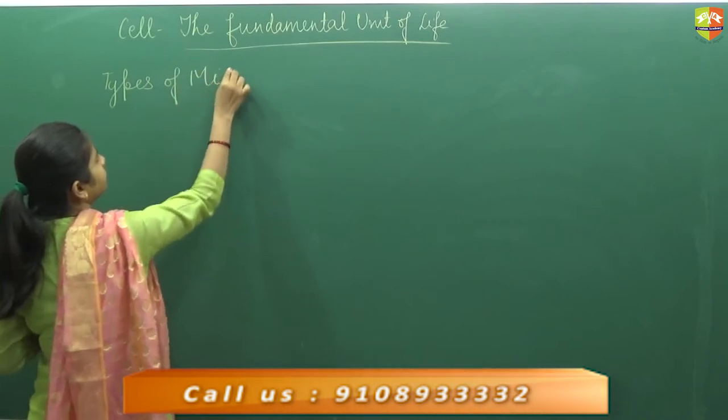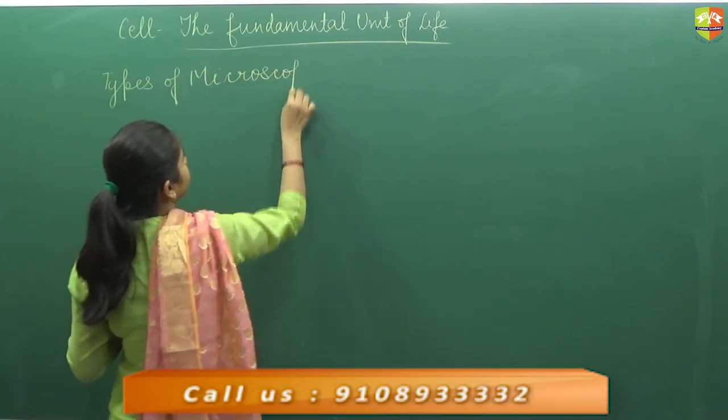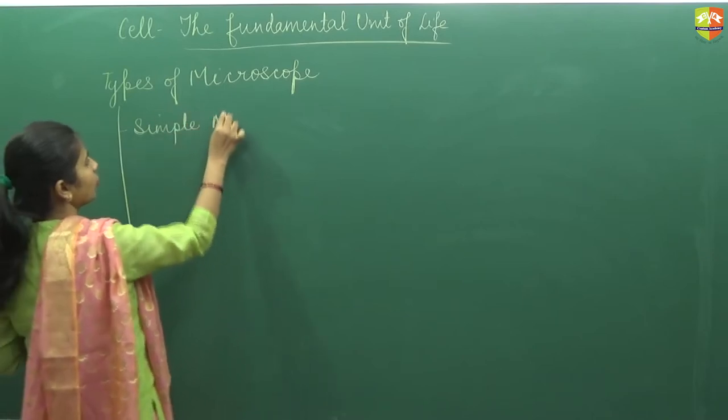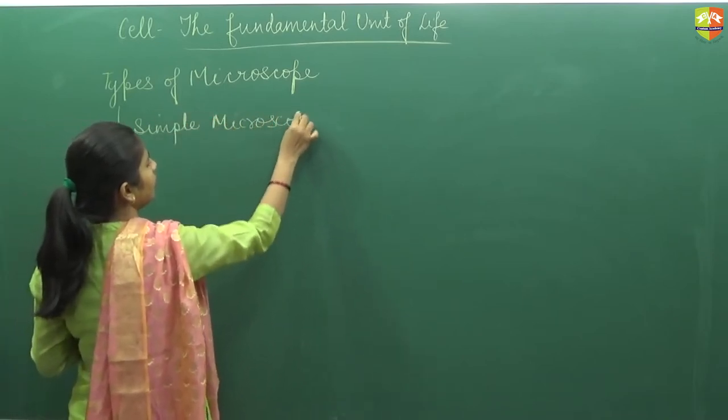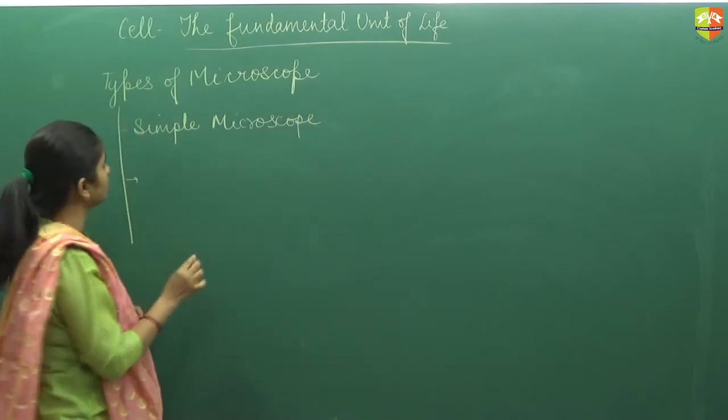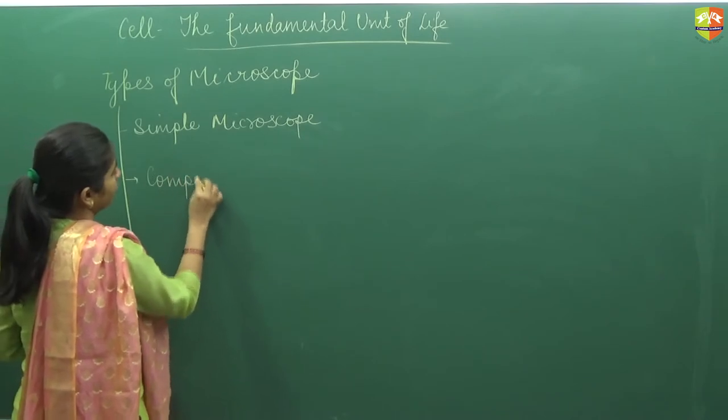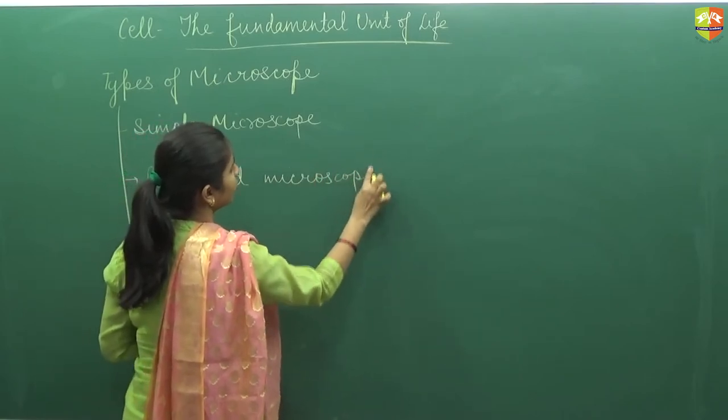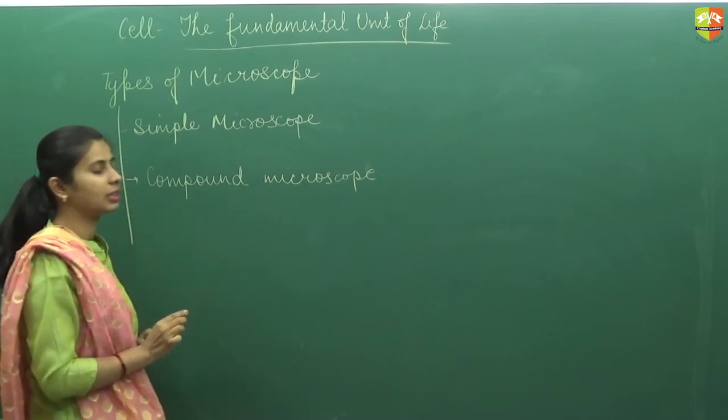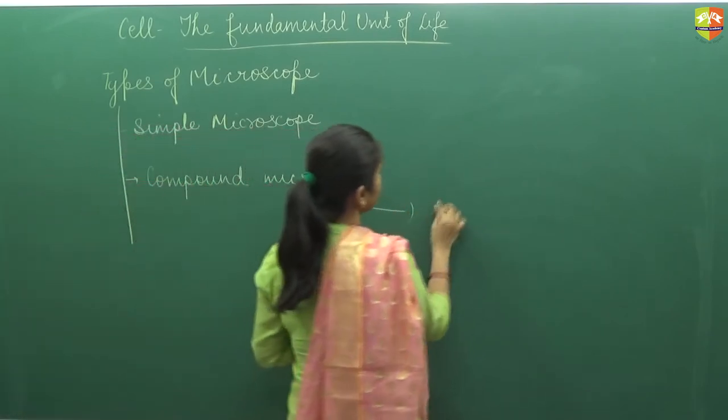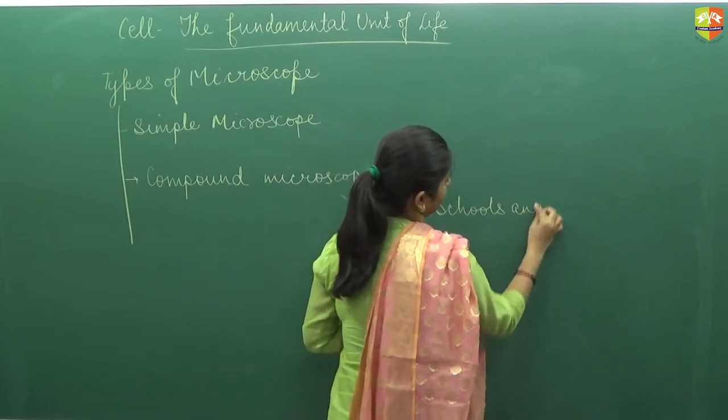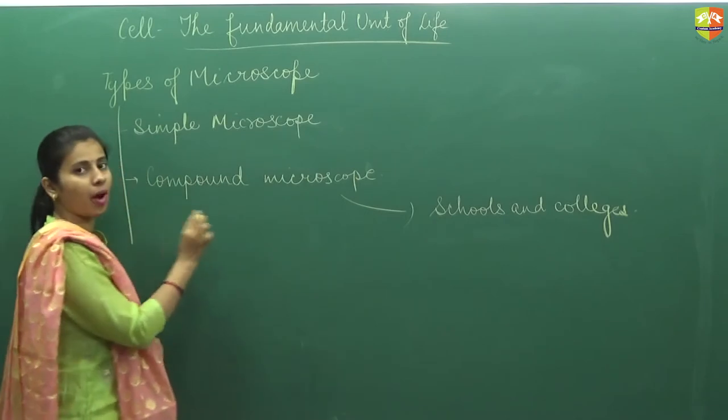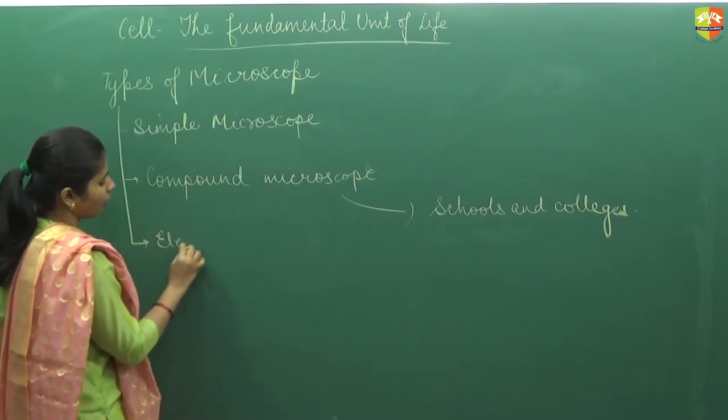The three types of microscope: First is simple microscope. This microscope was used for the discovery of the cell, which contains two lens, that is bi-convex lens. Second is compound microscope. As it is clear by the name, it is compounded, means it is a little complex as compared to simple microscope. Compound microscope is basically used to see the specimens and slides that are used in schools and colleges. The microscope that you see in your lab, if you are in a school or college, that is normally compound microscope.